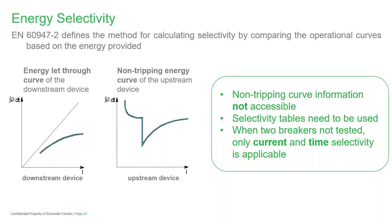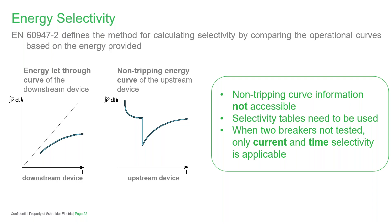Let's take a look at what the information provided by manufacturers typically looks like. We take the example of a 50-amp MCB used downstream, tested with a 160-amp breaker fitted with a 100-amp thermomagnetic trip unit upstream. This combination can only achieve partial selectivity with a limit of 800 amps — anything above 800 amps, both breakers will trip at the same time. However, we can achieve total selectivity if the upstream breaker is fitted with a 125-amp trip unit.